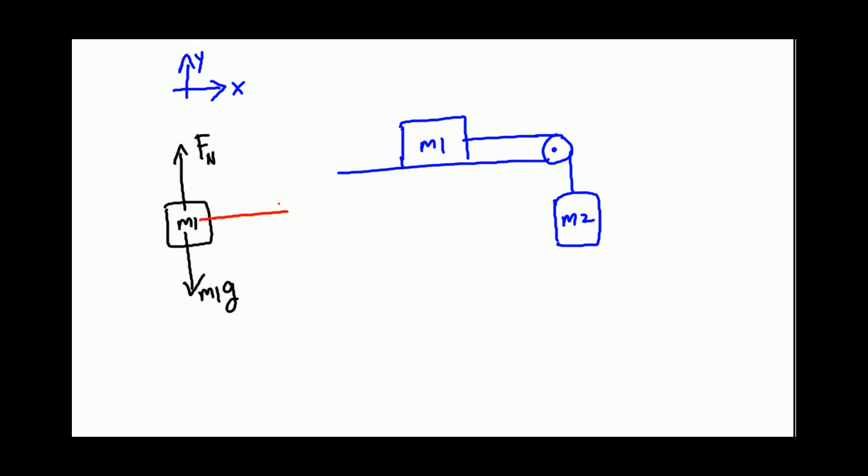And that is the tension. So net force along y, you can write it as net force along y is equal to zero. Along the vertical, the force is balanced, so you say normal force equals mass m1 times gravity, acceleration due to gravity.